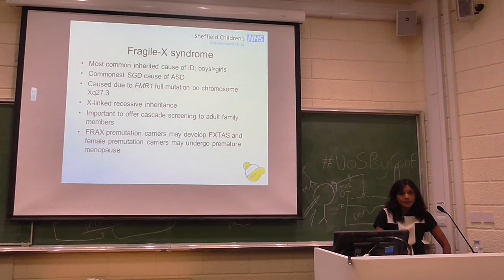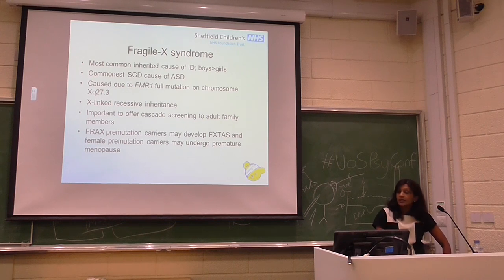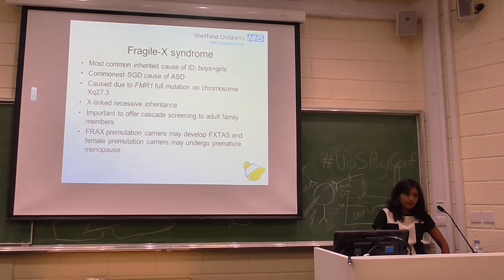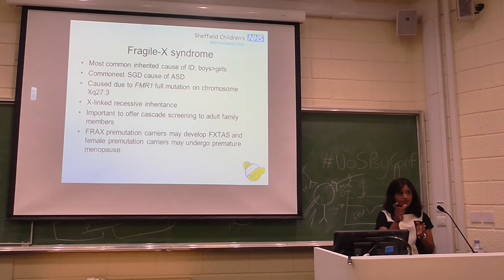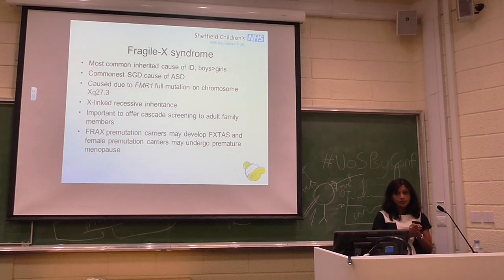Fragile X syndrome is said to be the most common inherited cause of intellectual disability, and the commonest single gene disorder cause of ASD. Boys are more commonly affected than girls. It's caused by FMR1 full mutation on chromosome Xq27.3, and follows an X-linked recessive pattern of inheritance. It's important to make this diagnosis for clinical reasons — we need to offer cascade screening for extended family members to inform recurrence risk. Fragile X premutation carriers may develop fragile X tremor-ataxia syndrome, and female premutation carriers may undergo premature menopause, so it's important for family planning.